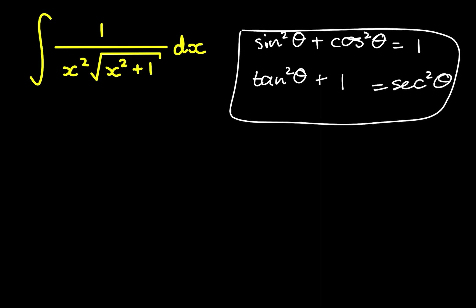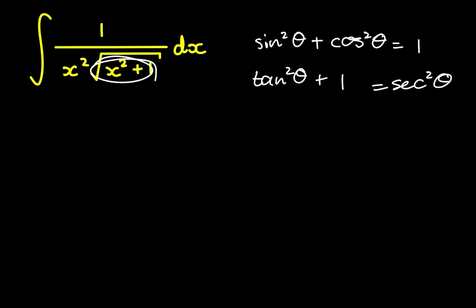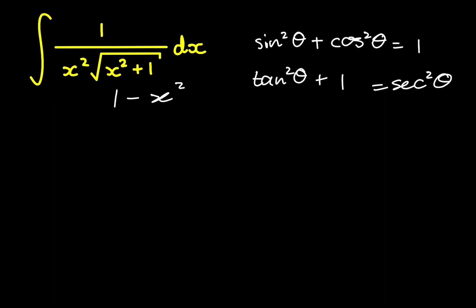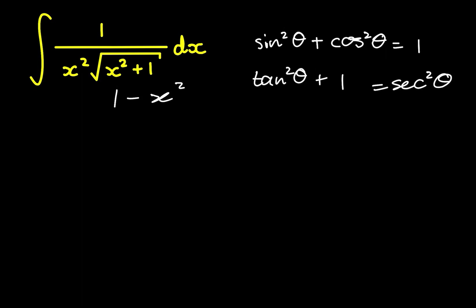Now I have my two identities, and I'm looking at what best matches this. I have a constant and a term being squared, both positive. So it makes sense to use tan squared of theta plus 1. If this were 1 minus x squared, I would use the other identity, because taking cosine squared across gives 1 minus cosine squared. It really just depends on what's inside your square root.